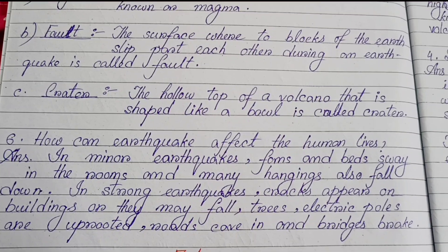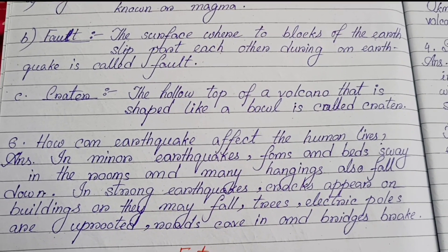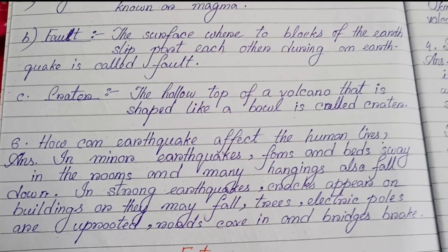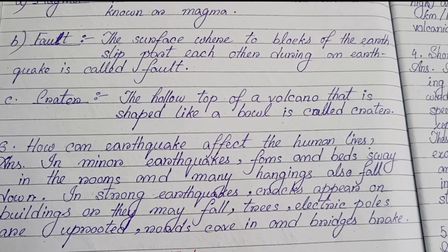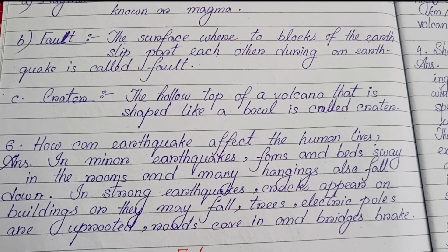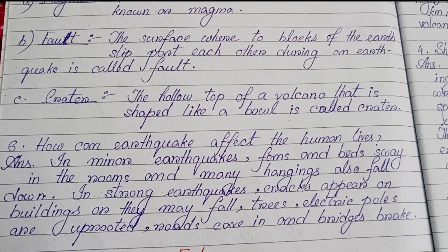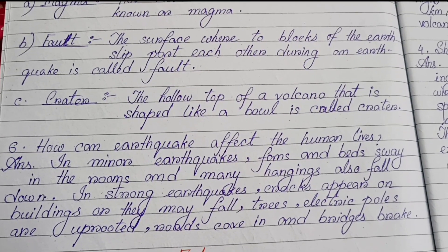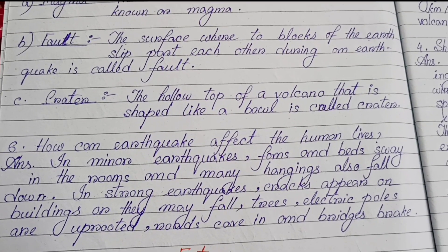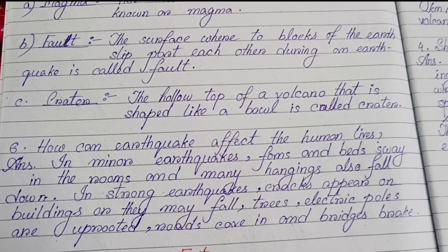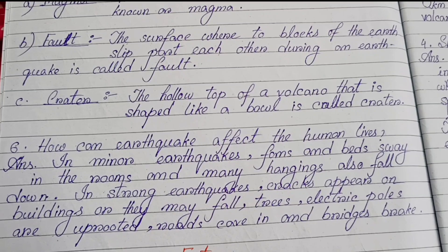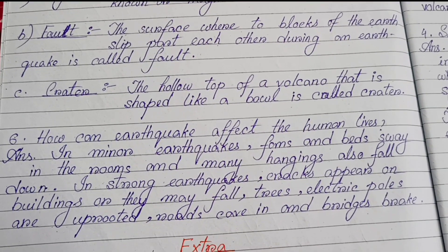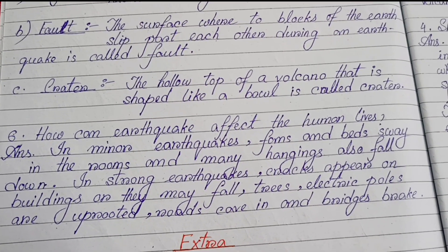Number six: How can earthquakes affect human lives? In minor earthquakes, fans and beds sway in rooms and many hanging objects fall down. In strong earthquakes, cracks appear on buildings or they may fall, trees and electric poles are uprooted, roads cave in and bridges break.